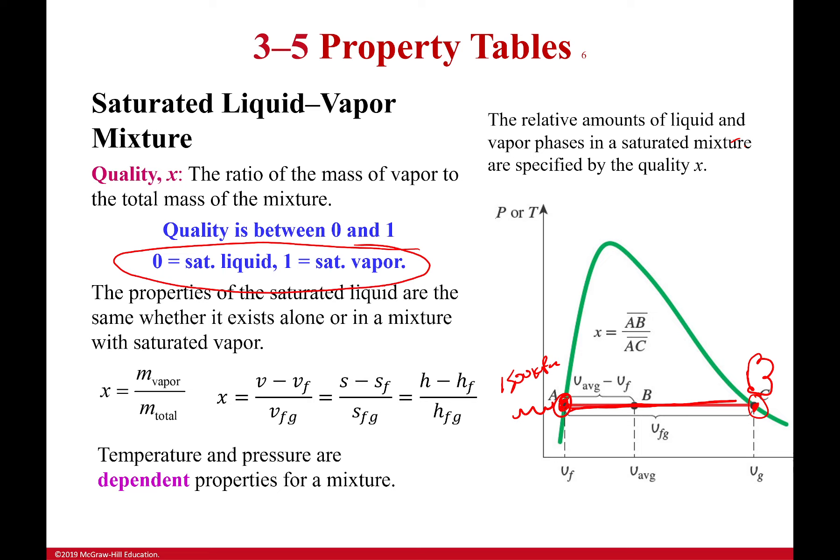And so this quality is simply saying how much of the properties are saturated vapor and how much are saturated liquid. So when it's zero quality, it's saturated liquid. When it's one, it's saturated vapor. And it can never be higher than those two. It's always one or the other. So when I find a property somewhere in the middle, that is the averaged property, the average property of the vapor and the liquid.